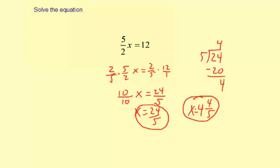You could also solve this by writing it as 5x divided by 2 equals 12, and then continuing to solve that way. That's correct, but you'll still get the same answer.